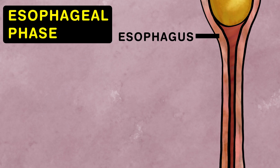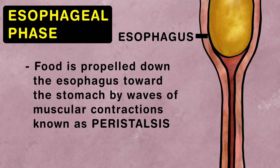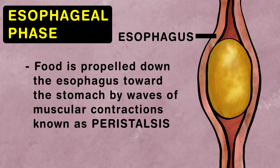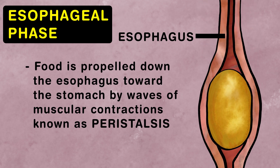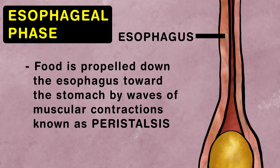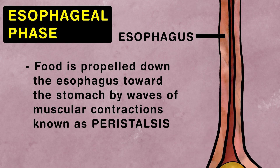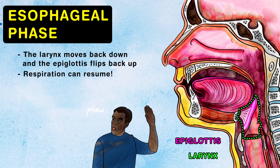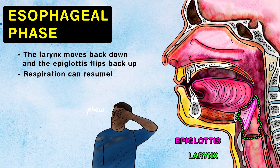During the esophageal phase, food is propelled down the esophagus towards the stomach by waves of muscular contractions known as peristalsis. The larynx moves back down, and the epiglottis flips back up so respiration can resume.